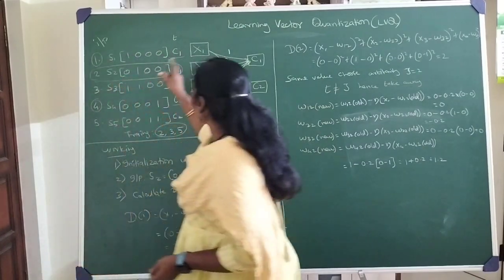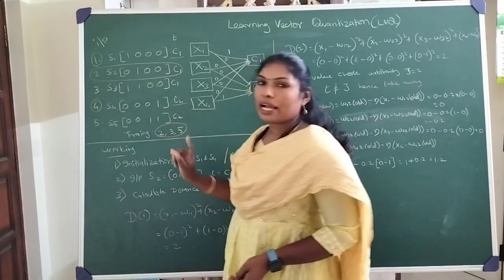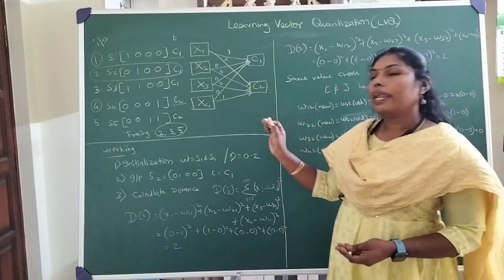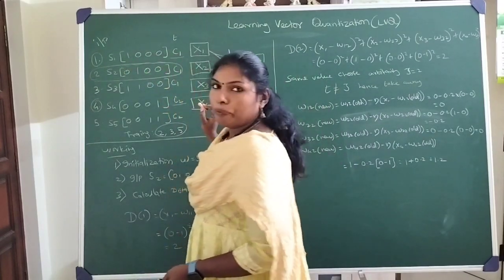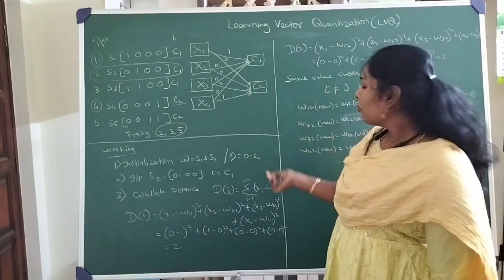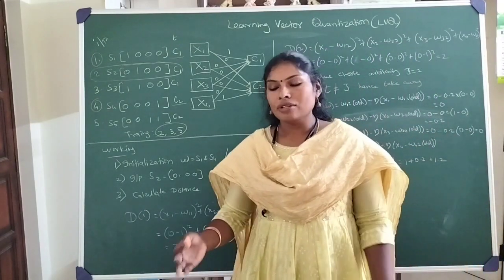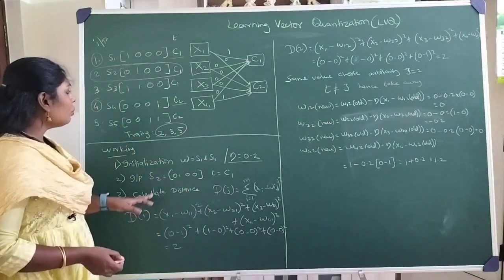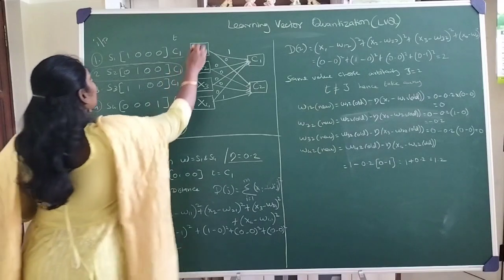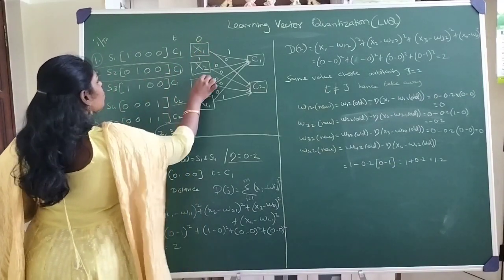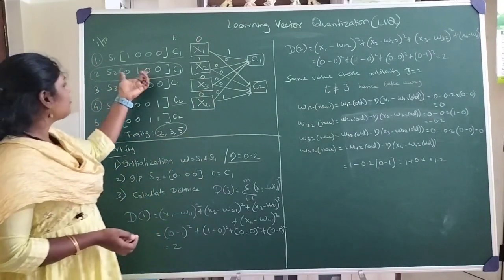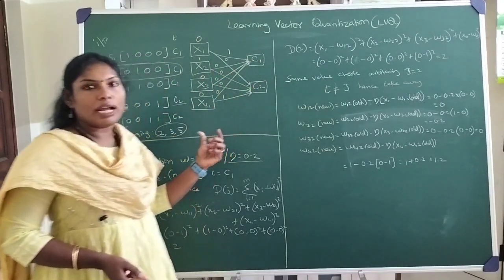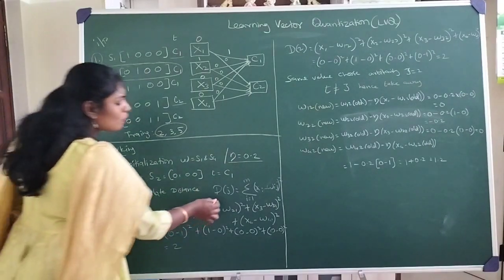For S2, the input values are X1=0, X2=1, X3=0, X4=0, and it actually belongs to cluster 1. We calculate the Euclidean distance between this input and each cluster. The learning rate also needs to be initialized — it may be given in the problem or you can take a minimal value. Using the Euclidean distance formula (Xi minus Wij, squared and summed), we compute the distance to cluster 1.